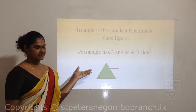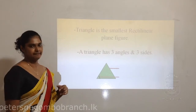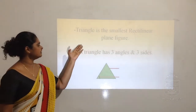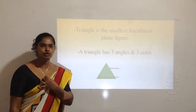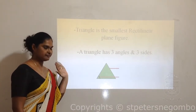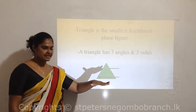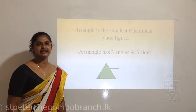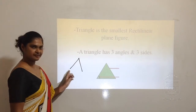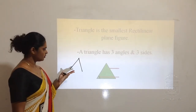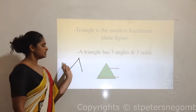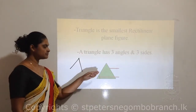Now we are going to learn about the smallest rectilinear plane figure. The smallest one is the triangle - triangle is the smallest rectilinear plane figure. Why? It has to be a closed plane figure, aligned on a plane, and made only with straight line segments. With two straight line segments, can you make any closed plane figure? No. So you need three sides at least to make a closed plane figure.